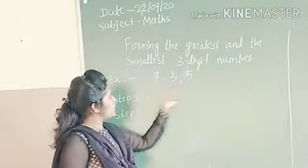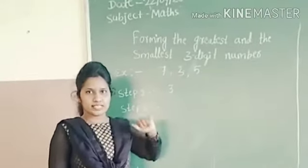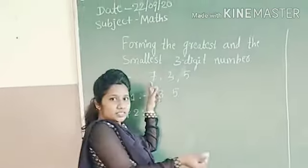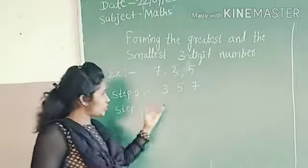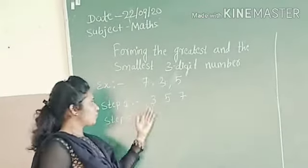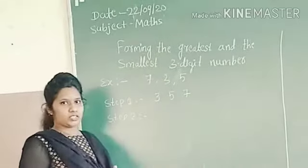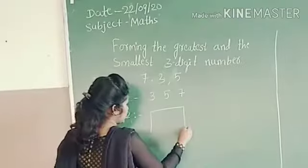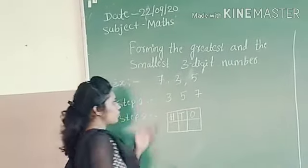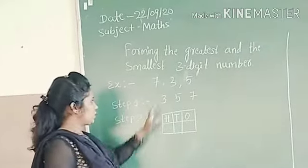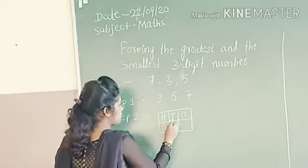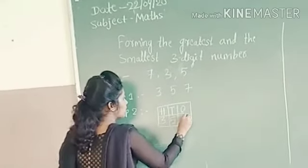Among the remaining 2 digits, which digit is the smallest? 5. So I will write 5. And the biggest digit is 7. Now we arrange these numbers in ascending order: 3, 5, 7. Second step: we will put these numbers in the place value chart. I will put 3 in the 100s place, 5 in the 10s place, and 7 in the 1s place.